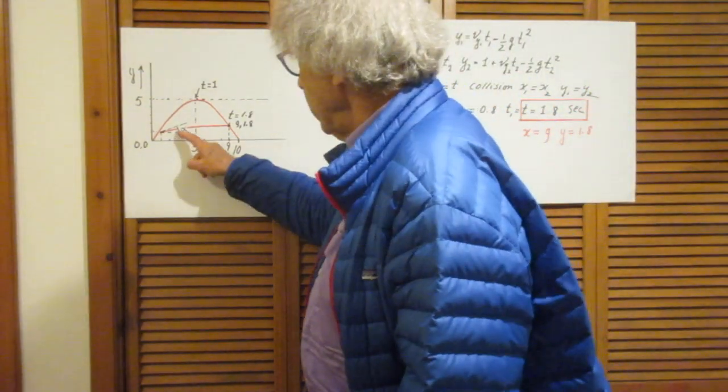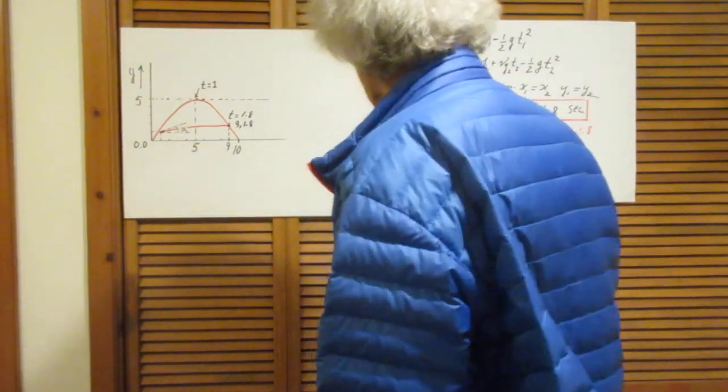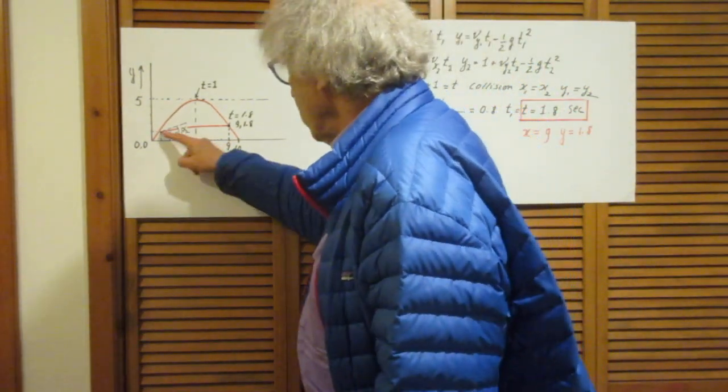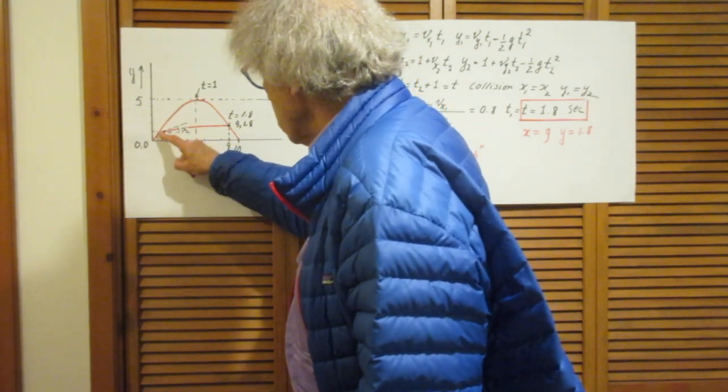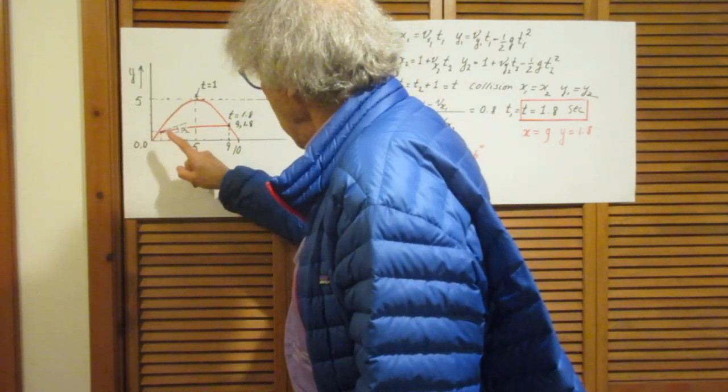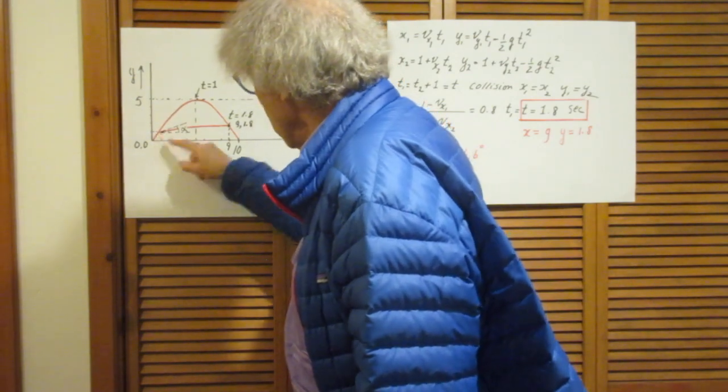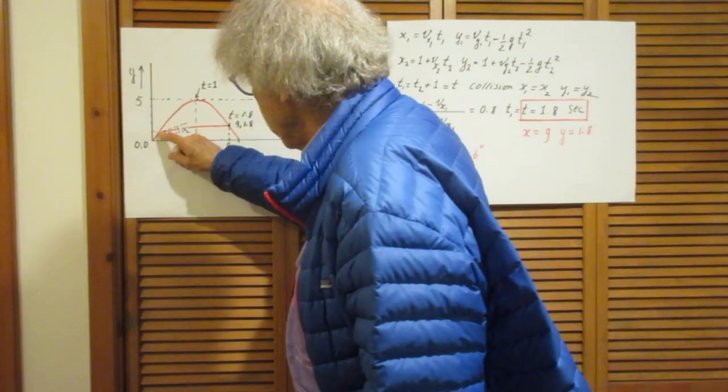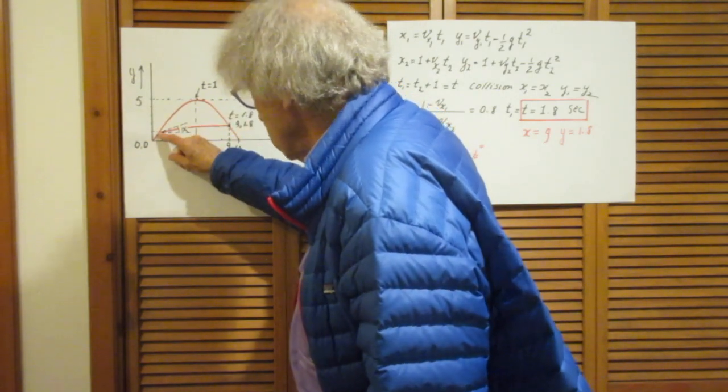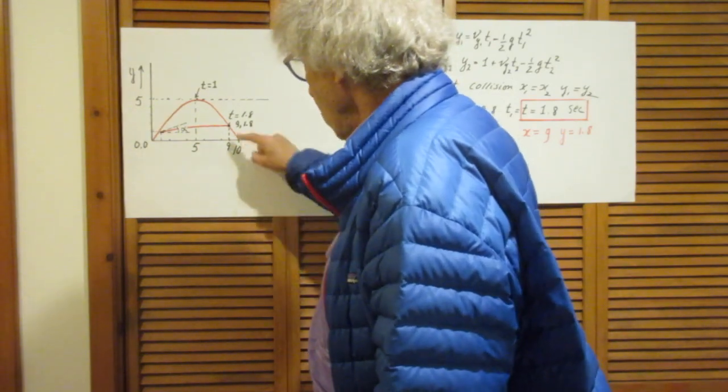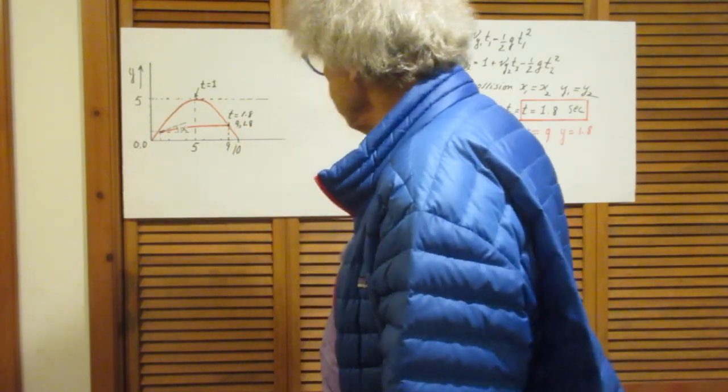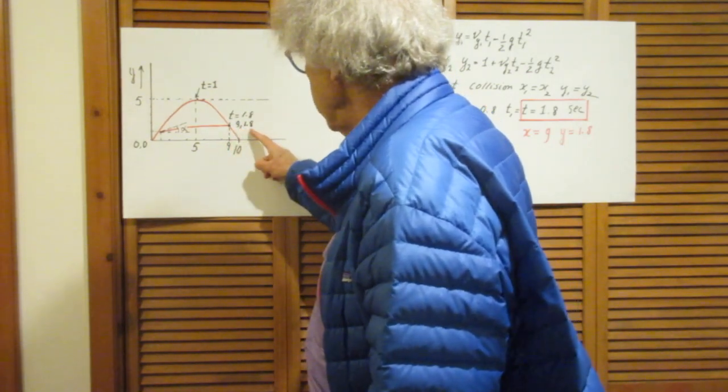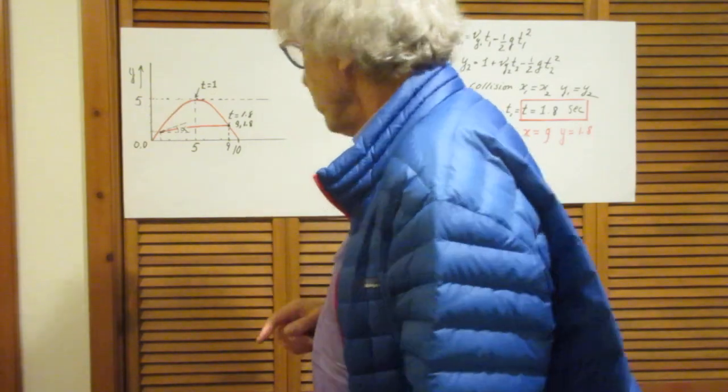So we calculated that alpha is 26.6 degrees. And so the trajectory of alpha, by the way, it starts here at t equals 1. So when object number 1 is here, that's the moment that object number 2 is shot up in the sky. And then they collide here. x equals 9, y equals 1.8 and the time t is 1.8 seconds.